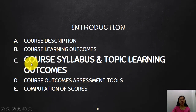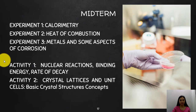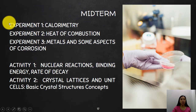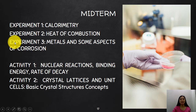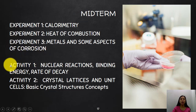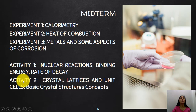The third topic is your course syllabus and topic learning outcomes. For the midterms, we will have three experiments: Experiment number one, calorimetry; Experiment number two, heat of combustion; Experiment number three, metals and some aspects of corrosion. Also during midterms, we will have Activity number one — nuclear reactions, binding energy, and rate of decay — and Activity number two, crystal lattices and unit cells under basic crystal structure concepts.